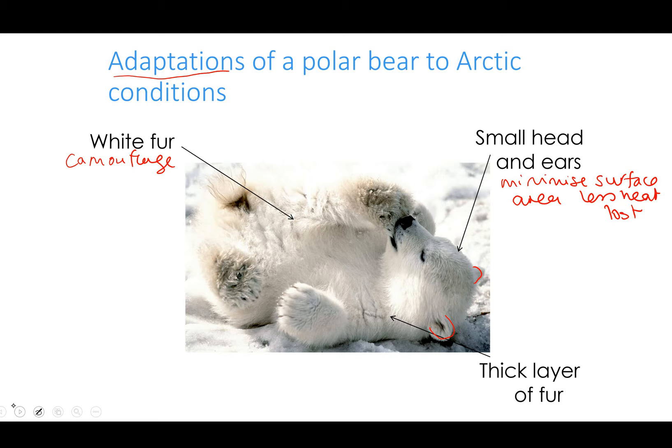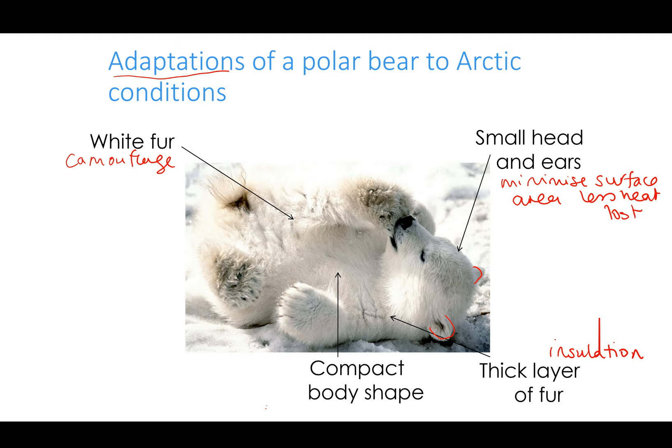Thick layer of fur: the key word is insulation — it traps air between each of the hairs. Compact body shape: this is about having a small surface area to volume ratio. Even though the polar bear is quite large, it's quite curvy and doesn't have a massive surface area. Compare this to an elephant, which has huge ears — a big surface area — to help it lose more heat. A small surface area to volume ratio minimises heat lost. Thick layer of fat again acts as insulation to keep the warmth in.